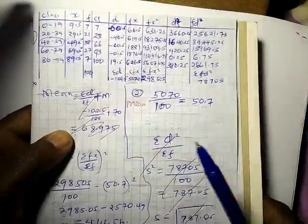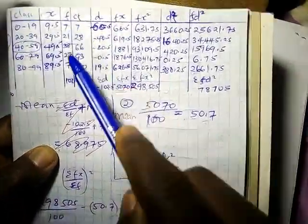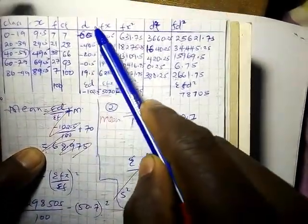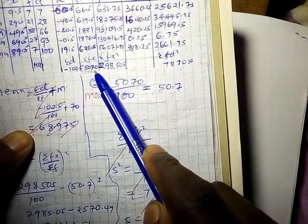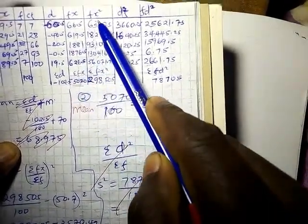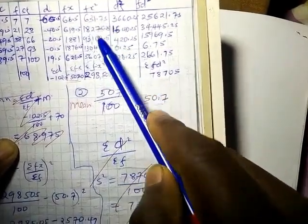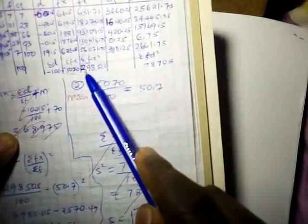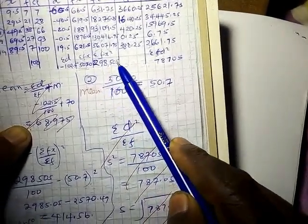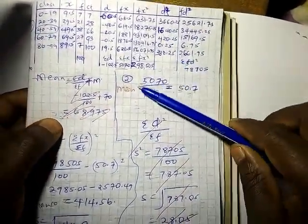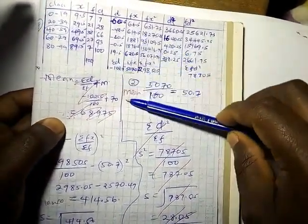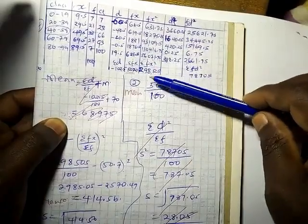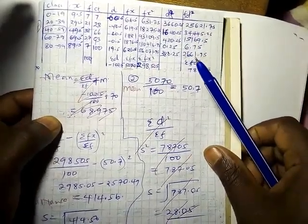If you look at the total frequency is 100, fx is 50.70, summation of fx square is 29,850.5, all that. So I want to show you that when you are using a calculator to confirm, you can easily make a mistake.